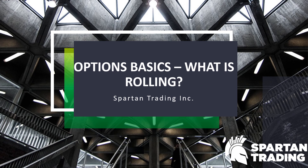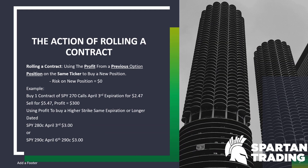It's a fairly simple concept. Basically what it's used for is to make sure that your profits that you are making on one contract can be used to take another position without taking on more risk. That's a big advantage when you're trading options, especially when trends are intact either to the upside or the downside and stay intact for extended periods of time. So rolling a contract means using the profit from a previous option position on the same ticker to buy a new position.